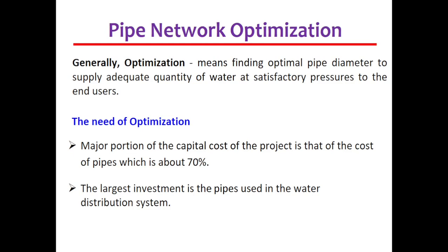Now, what is the need of optimization? The major portion of the capital cost of the project is the cost of pipes, which is around 70%. If you have a project, 70% of the total cost is the part which will be covered with pipes. So the cost of pipes is the largest portion of the project cost, making pipes the most important elements in the scheme of water supply. The largest investment in a water distribution system is in the pipes used.